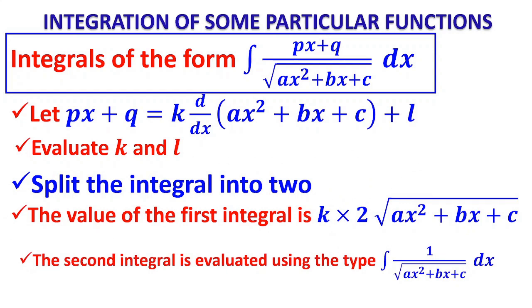The second integral, of the form 1/√(ax² + bx + c), can be done by the type already seen — converting the term inside the square root to the form (x ± a)² ± b² and applying the standard formula. To recollect: numerator is a linear factor, denominator is a quadratic factor inside a square root. Put px + q = k·(d/dx of ax² + bx + c) + l, evaluate k and l, split into two integrals.